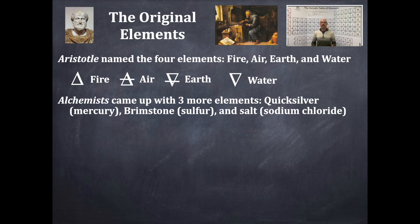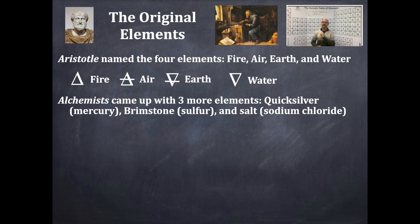Alchemists dominated chemistry for about 2,000 years. They worked in secret and wouldn't tell anyone, because if they did, some king or queen would capture them and hold them prisoner until they accomplished one of two tasks: turning base metals into gold, or finding the elixir of life — how to live forever.